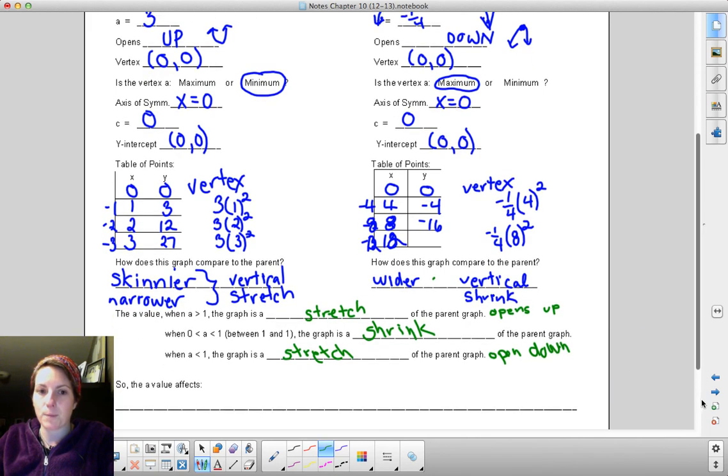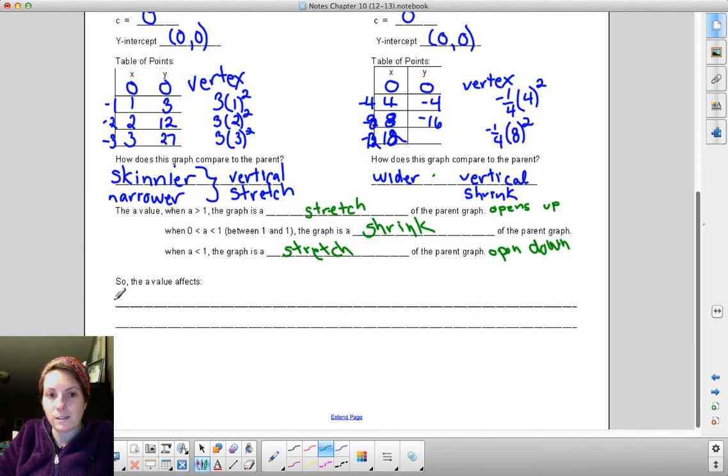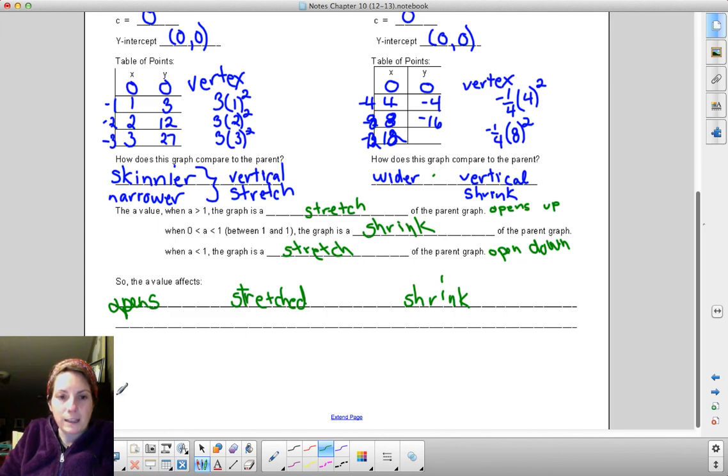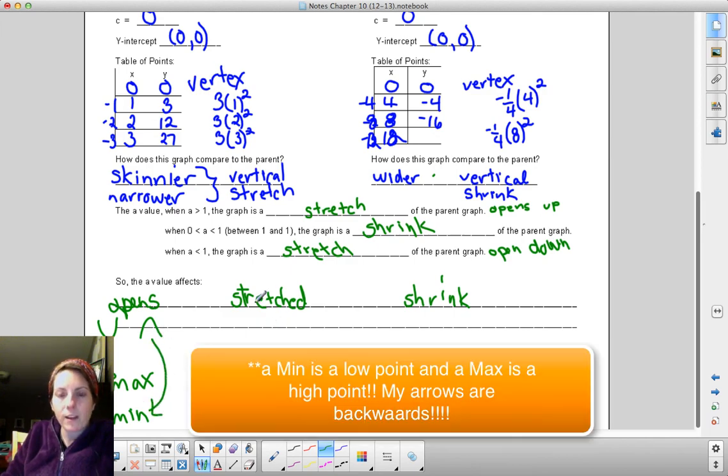So the a value affects both how it opens and what the a value affects. It affects how it opens, it affects whether it's been stretched away from the x-axis or if it's shrinking closer to the x-axis. This opening is also tied to max and min. That a value is a very powerful value. So a value affects how it opens. We call this opening up and opening down. A parabola that opens up has a minimum, a parabola that opens down has a maximum. A graph is said to be stretched in comparison when it gets skinnier or narrower, and it's said to be shrunk when it looks wider.